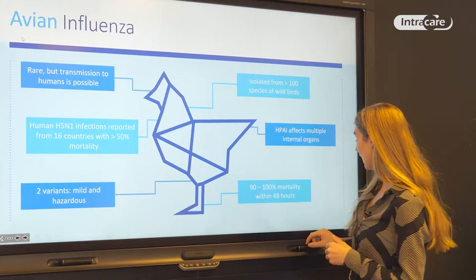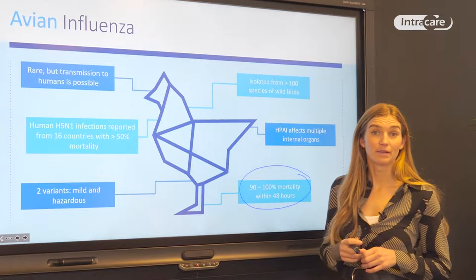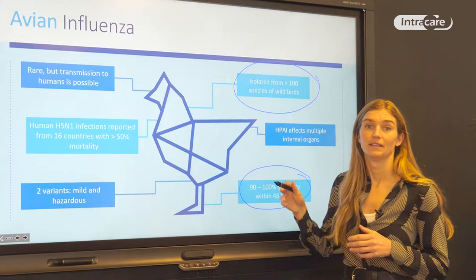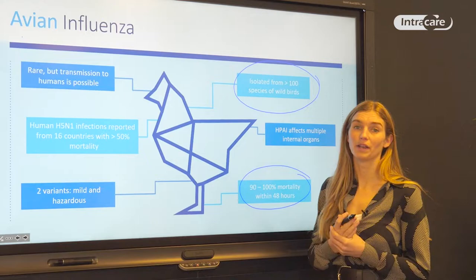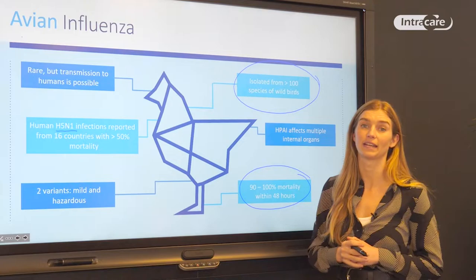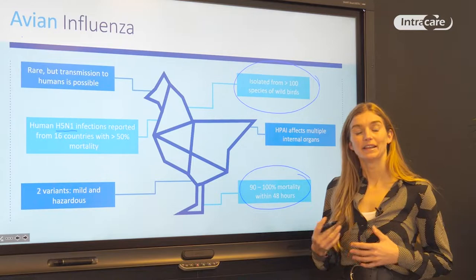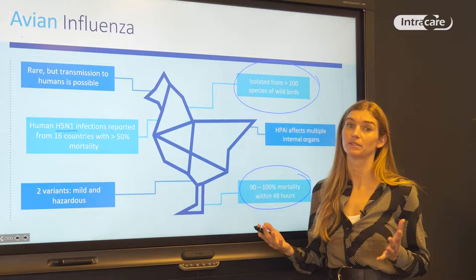We are talking about a disease that can cause really high mortality rates — 90 to 100% within 48 hours — so very severe illness in a really short time span. This disease has been isolated from over 100 species of wild birds. H5N1 is giving us many troubles: human H5N1 infections have been reported from 16 countries over the last decades, and over 50% of those infected humans died. That is why health authorities and governments are really worried, because there is a possible — though rare — transmission to humans.